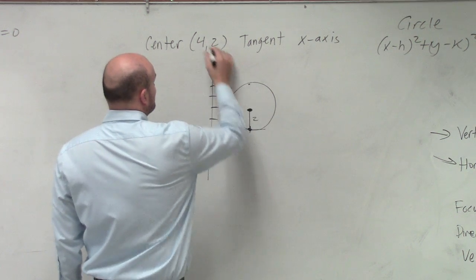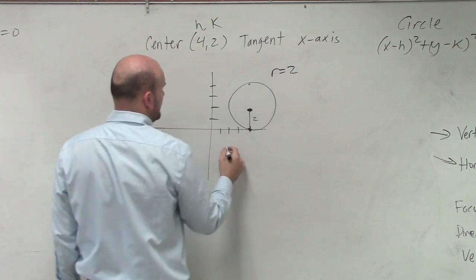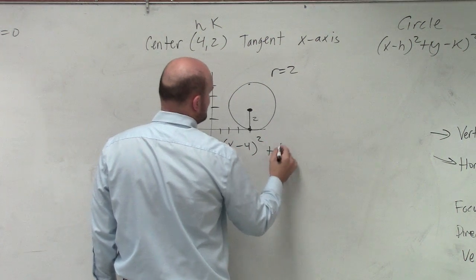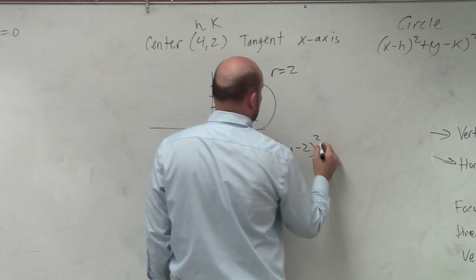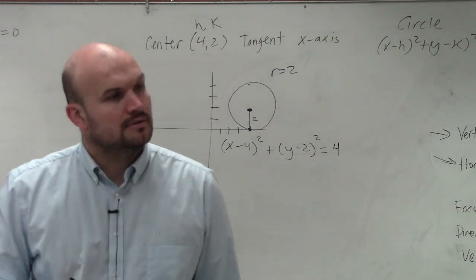So my center, that's my h and that's my k. And my r is equal to 2. So I do x minus 4 squared plus y minus 2 squared equals 2 squared, which is 4. That's it. Done.